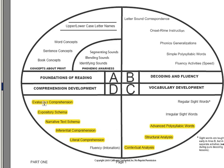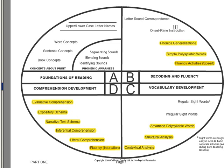Now, there's no point in trying to get a child to comprehend any higher level text unless they are fluent. So the all-important question now becomes, how do we get a child to be fluent enough to be able to comprehend? Well, we do so by ensuring, by 3rd grade, that they're able to read any simple polysyllabic words, any phonics generalizations, and any onsets and rhymes when they encounter them. We also ensure fluency by ensuring that they can recognize any sight words and any irregular sight words that they encounter.